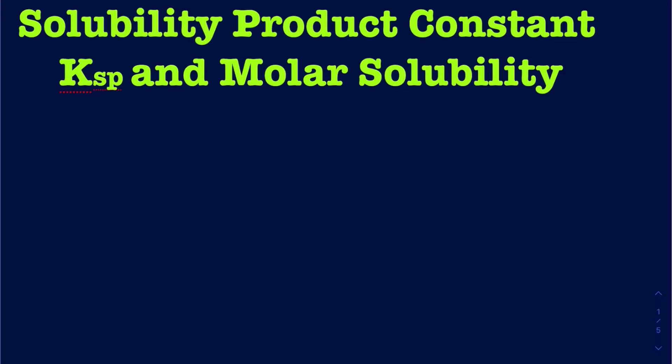In this video we're going to be talking about the solubility product constant, Ksp, and the molar solubility. Whenever we talk about solids, we're going to be writing their equilibrium constant expression in the form of Ksp, also called a solubility product constant. It's very similar to what we have written for Ka's and Kb's, but now we're talking about salts that do not dissolve in water too much. So we're trying to figure out how much they dissolve in water based on their Ksp values. Let's learn how to write the Ksp expression first.